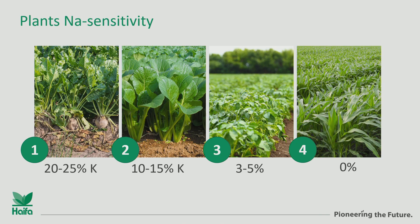Then we have plants that can tolerate only a little bit of sodium - like potato, but also tomatoes, cucumbers, most of the greenhouse crops. And plants that don't tolerate sodium at all and we should avoid sodium for them - for example corn, but also soya beans.